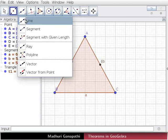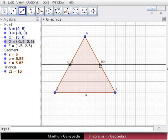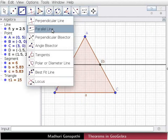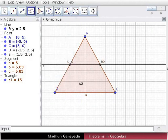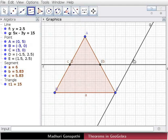Using the line tool, draw a line through points D and E. Now we will draw a line parallel to segment AB. For this, click on the parallel line tool and click on segment AB. Then click on point C. Line G parallel to segment AB is drawn.